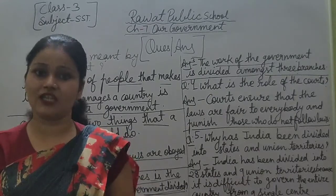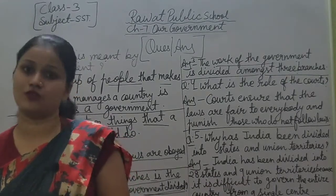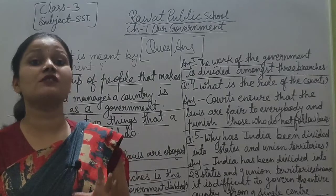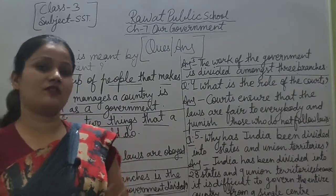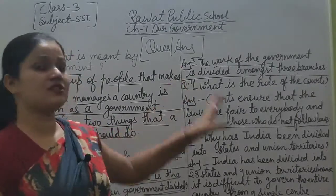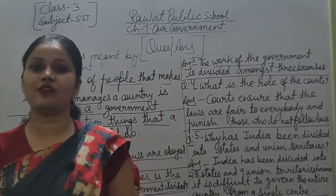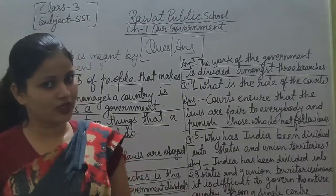Three branches — Parliament, Government, and Courts. So these are three branches of our government and the work of government is divided into three branches.